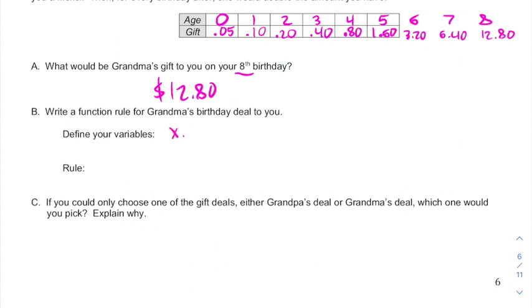Again, x is our age, y is our gift amount, and our rule is going to use the model y = a times r to the x. We need to know the starting amount, which is still that y-intercept, and then we need to know that consistent amount we multiply by, which was two. And this is our exponential model, y = 0.05 times 2 to the x.